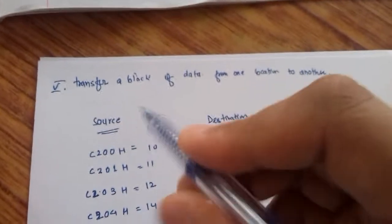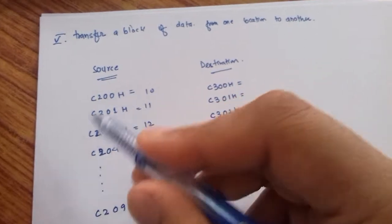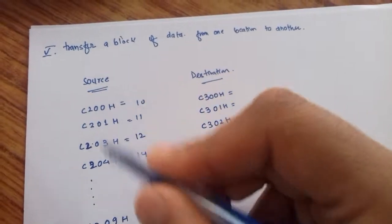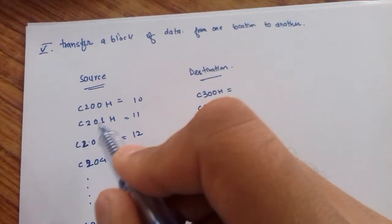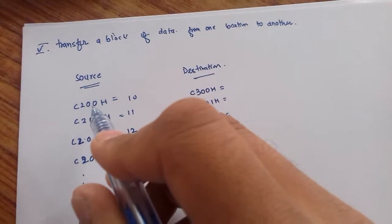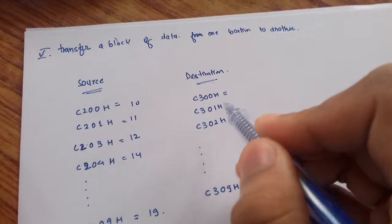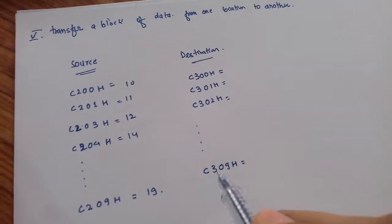What this program means is that we need to copy the content of this complete table to the destination table. The content of C200 should be copied to C300. Similarly C209 to C309.